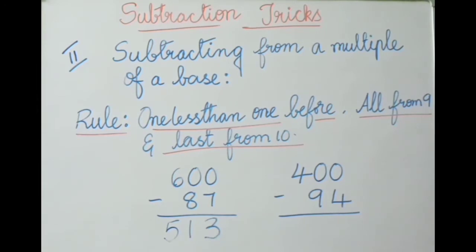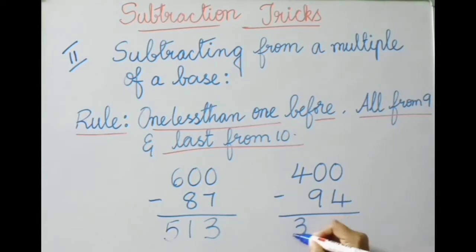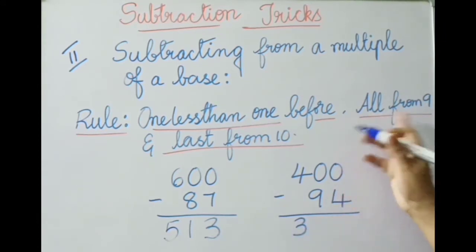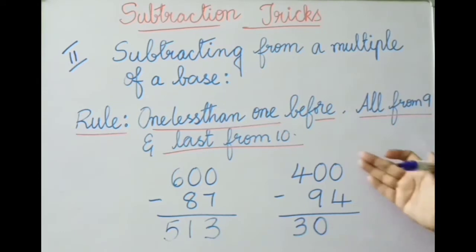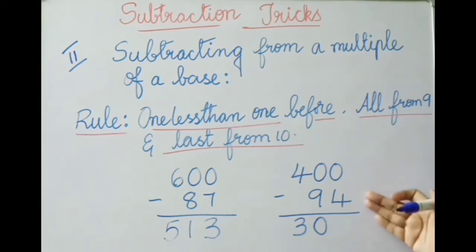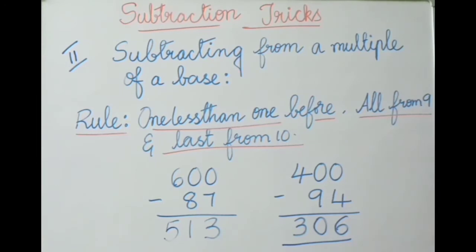See the next example: four hundred minus ninety-four. One less than the first digit — four minus one is three; all from nine — nine minus nine is zero; last from ten — ten minus four is six. So the answer is three hundred and six. Without taking any borrows, we have done this subtraction easily.